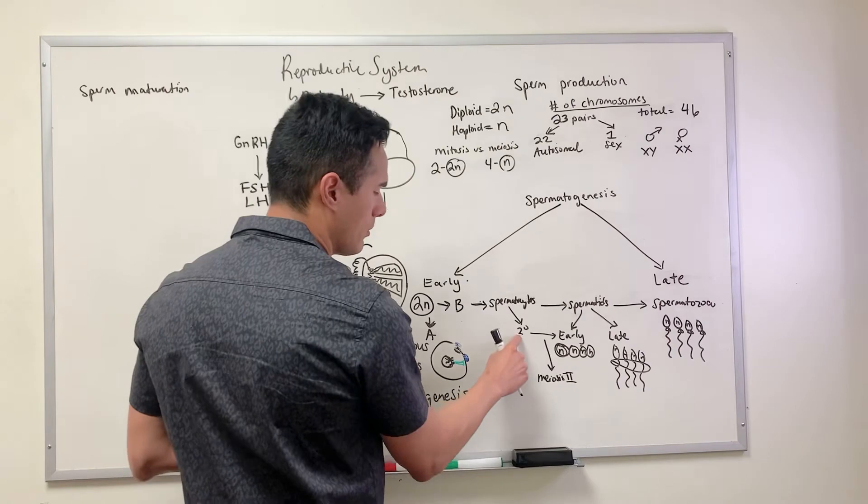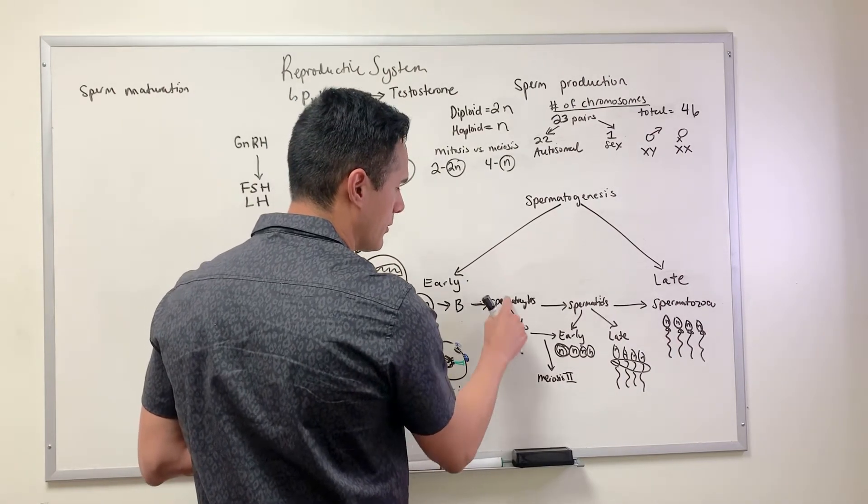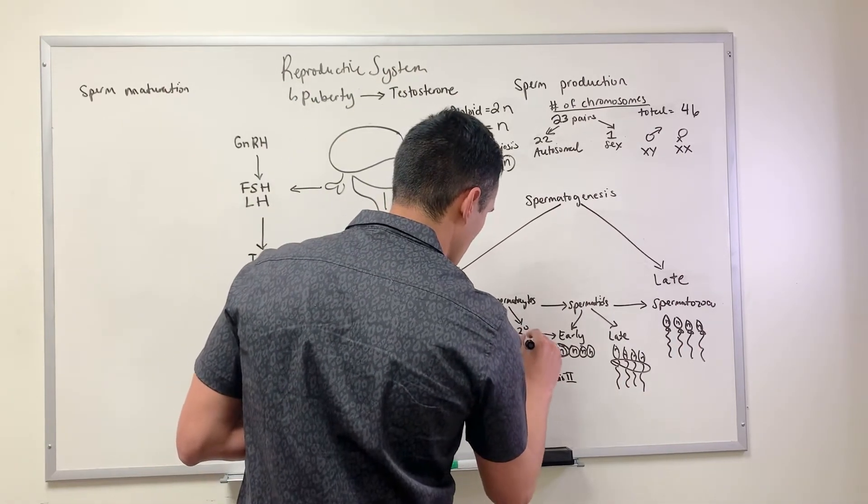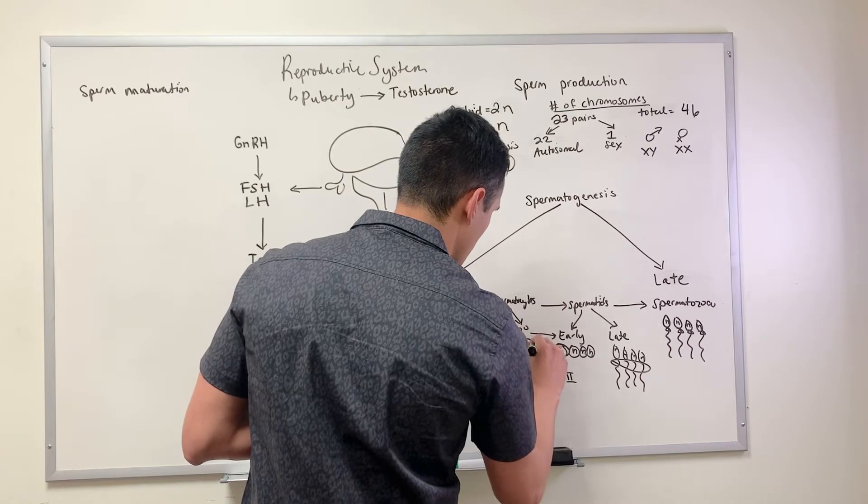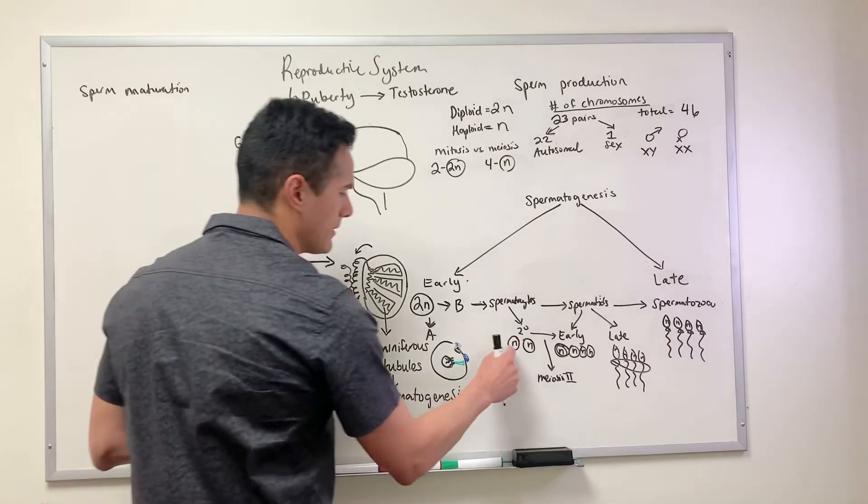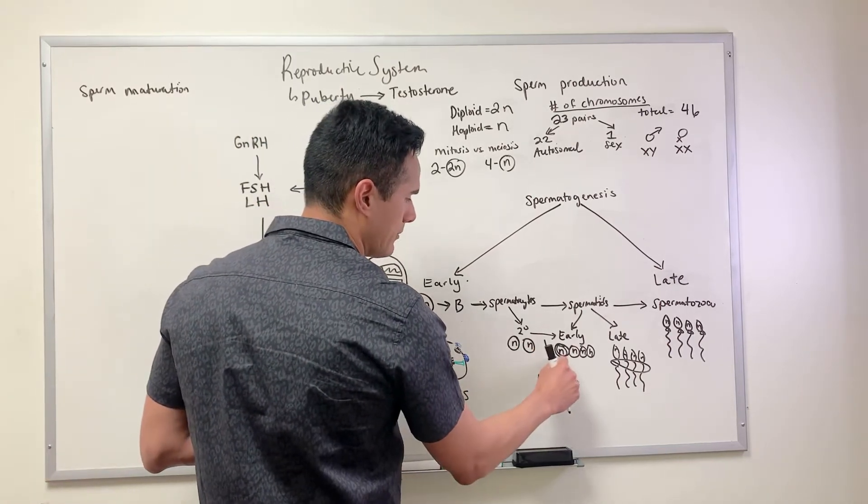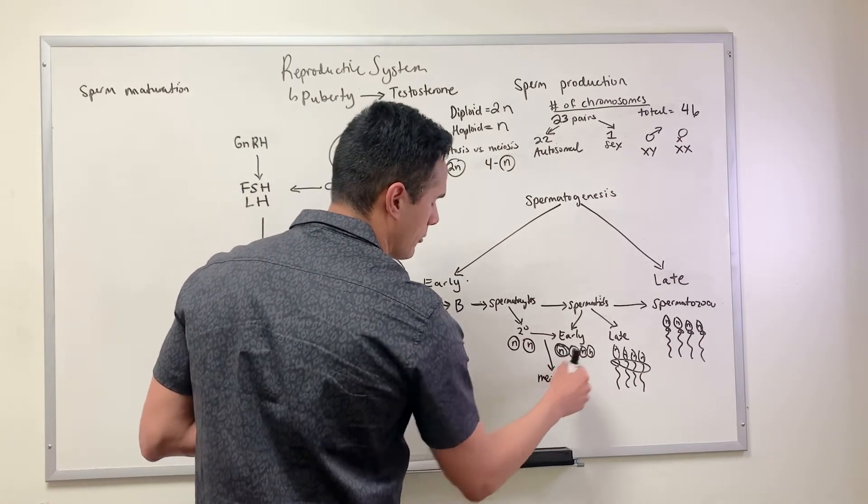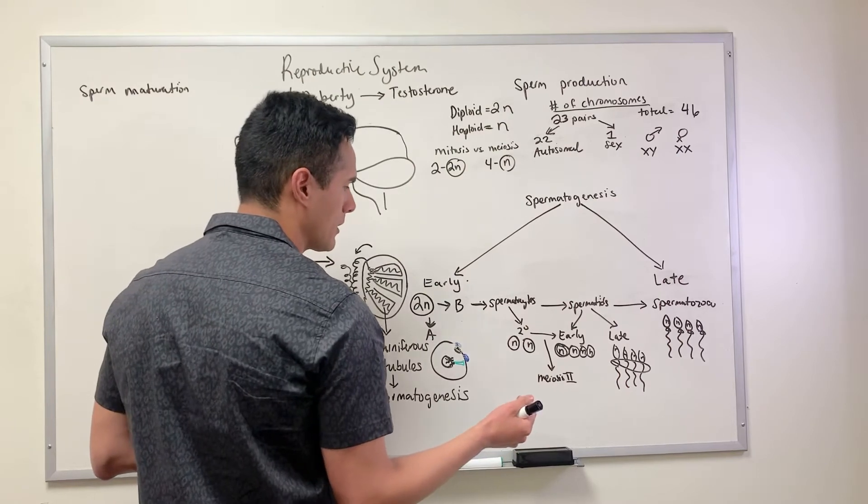What we're starting off here for the secondary spermatocytes is two haploid cells. We have these two haploid cells and then from here we get our four haploid cells.